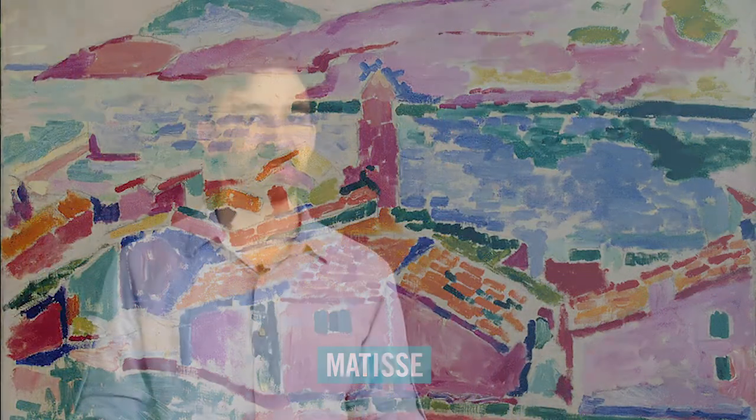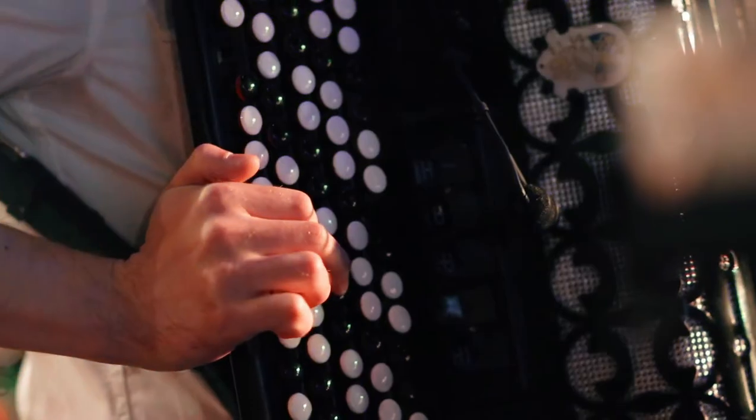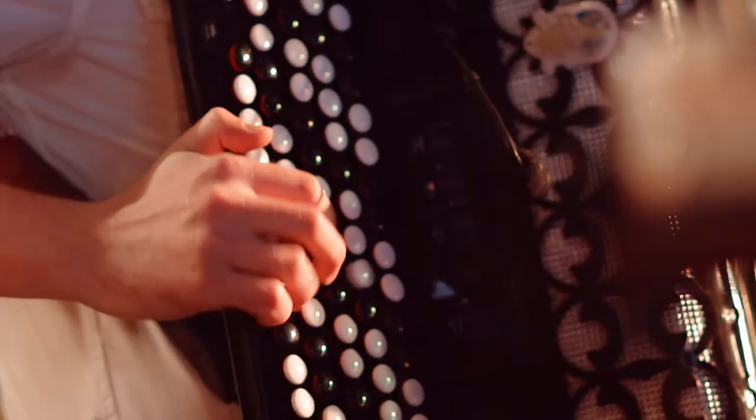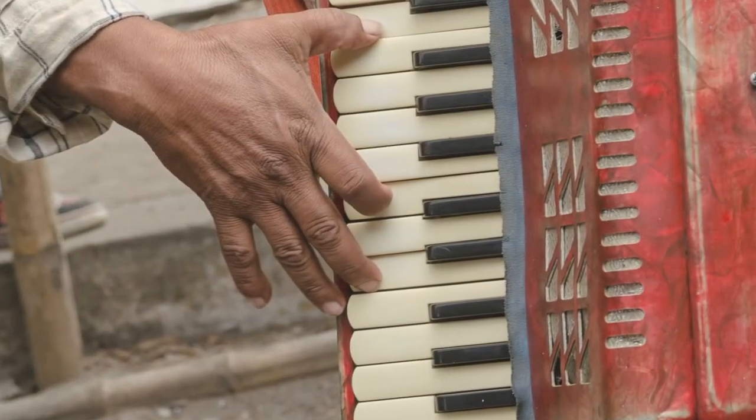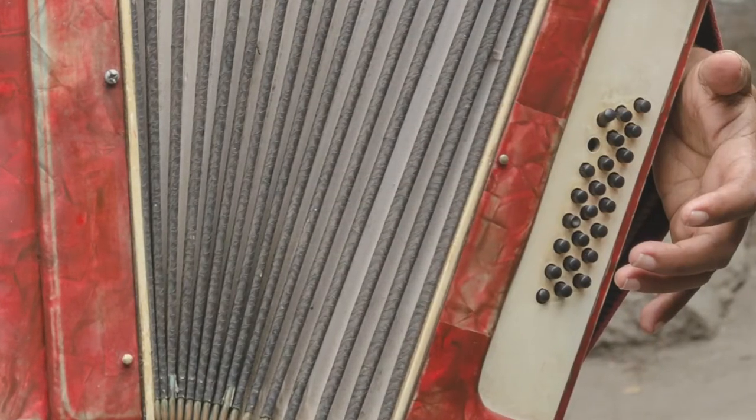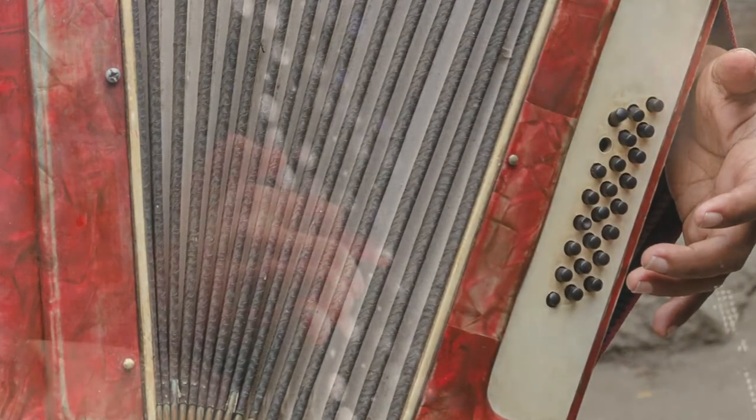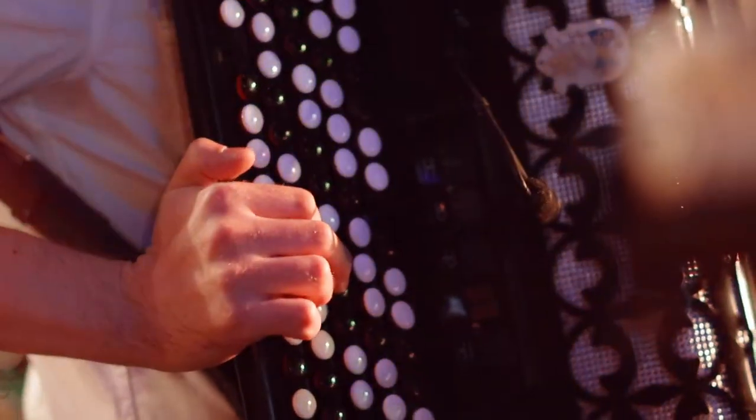But there is another likely source of inspiration for these unusual harmonies. The accordion. Accordions typically have two sides. One has buttons or keys like a piano that are usually used to play melodies. The other side has a different set of buttons.